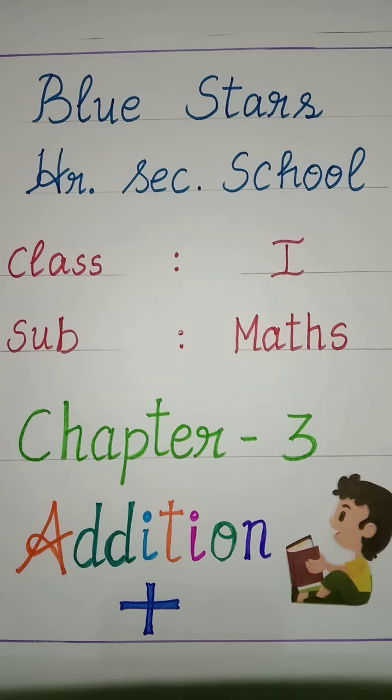Come to next sum. What number is it? 5. So, 5 lines. 1, 2, 3, 4, 5. What number is it? 3. So, 3 lines. 1, 2, 3. Count all the lines. 1, 2, 3, 4, 5, 6, 7, 8. Answer is 8.